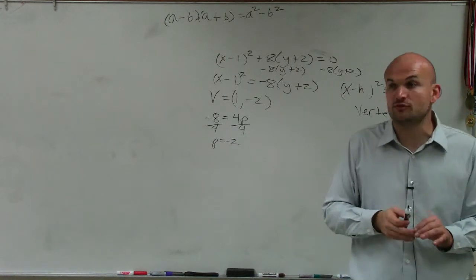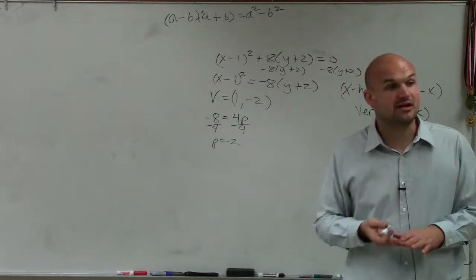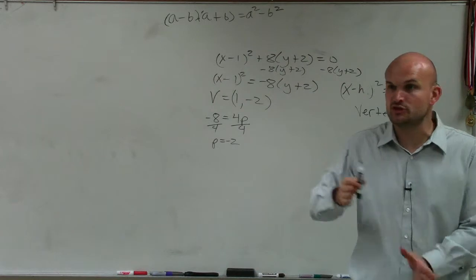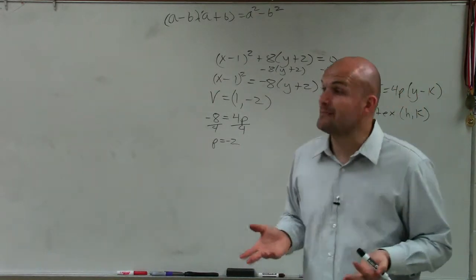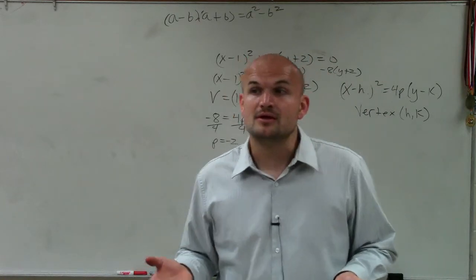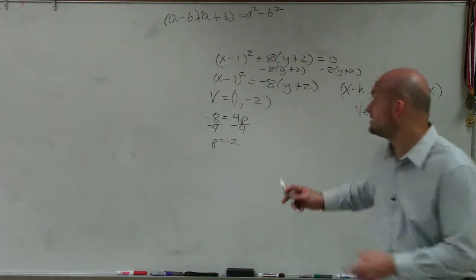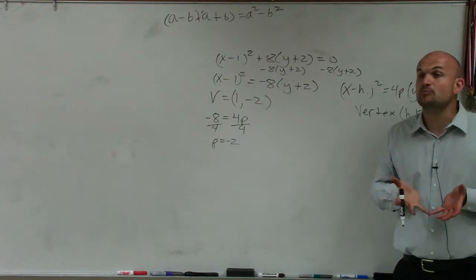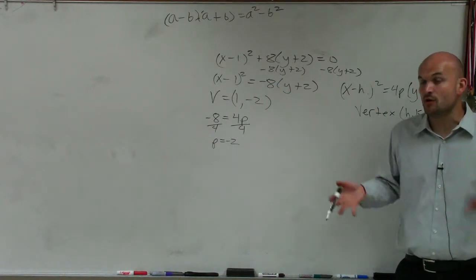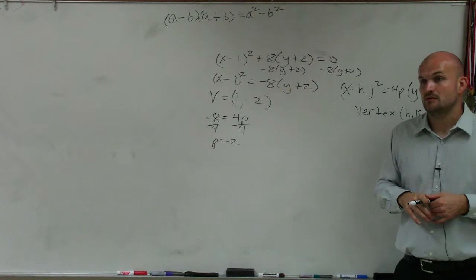Now, we could be going negative 2, could be going to the left, or it could be going down. Right? Those are the two negative distances, either horizontally or vertically. So I need to determine, am I going left or am I going down? So Kevin, we notice that this is an equation that has x squared. Is that going to be a parabola that's going to open up or down, or left or right? Up or down, right?